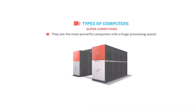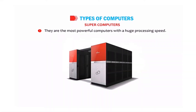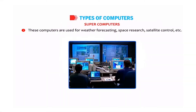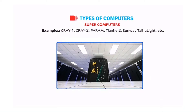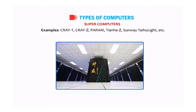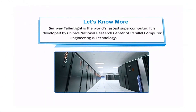Supercomputers are the most powerful computers with a huge processing speed. They are used for weather forecasting, space research, satellite control, etc. Examples include Cray-1, Cray-2, India's own supercomputer Param, Tianhe-2, and Sunway TaihuLight. Sunway TaihuLight is the world's fastest supercomputer, developed by China's National Research Center of Parallel Computer Engineering and Technology.